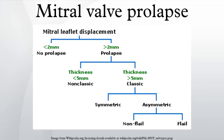Treatment: Individuals with mitral valve prolapse, particularly those without symptoms, often require no treatment. Those with symptoms of dysautonomia may benefit from beta blockers. Patients with prior stroke and/or atrial fibrillation may require blood thinners, such as aspirin or warfarin. In rare instances when MVP is associated with severe mitral regurgitation, mitral valve repair or surgical replacement may be necessary. Mitral valve repair is generally considered preferable to replacement. Current ACC/AHA guidelines promote repair of the mitral valve in patients before symptoms of heart failure develop. Symptomatic patients, those with evidence of diminished left ventricular function, or those with left ventricular dilatation need urgent attention.